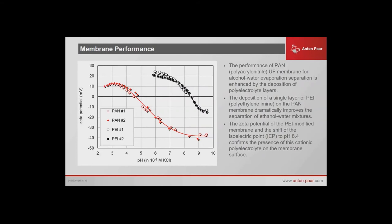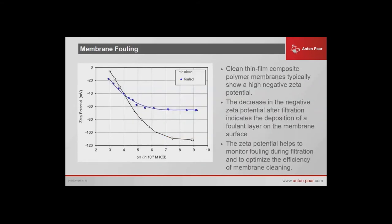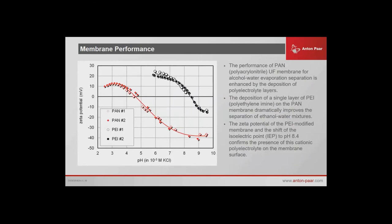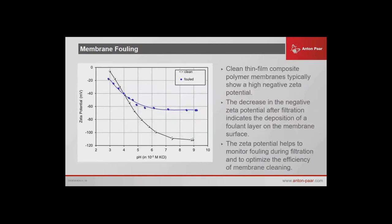Membrane fouling is a good application — changing and modifying the surface and making sure that it works. The key is figuring out when your membrane is completely fouled and when you need to do backwashing or backflushing. A clean membrane should look like one curve, whereas a fouled membrane looks different. You could titrate in the foulant to see the time it takes for your membrane to be completely saturated. Then modify your membrane surface and put it back and see if over multiple uses the clean and fouled membrane look the same — and that would be ideal.